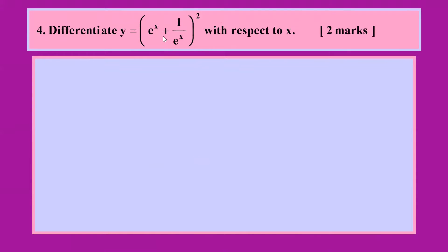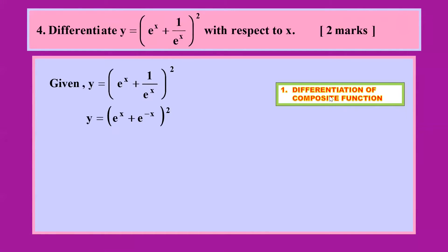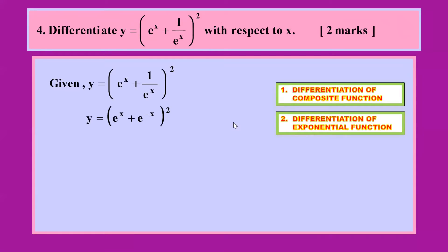If they give you the exponent raised to a power with a bracket, we need to apply other rules. First, I bring up the denominator, then I apply two things: differentiation of composite function and differentiation of the exponential function. I'll leave a link in the description for the composite function video if you haven't seen it.